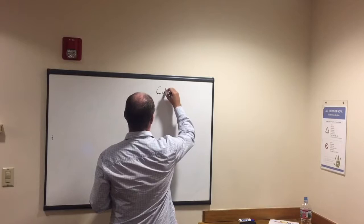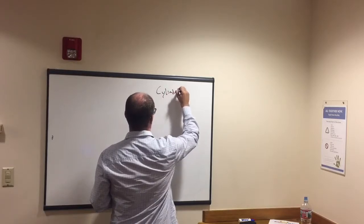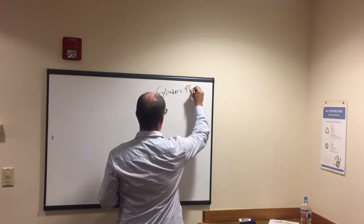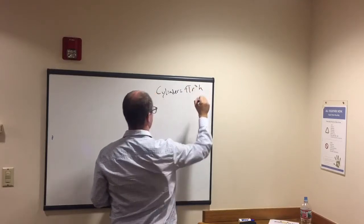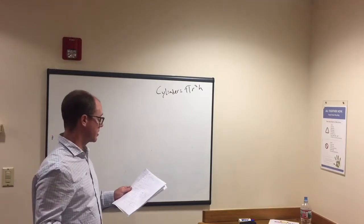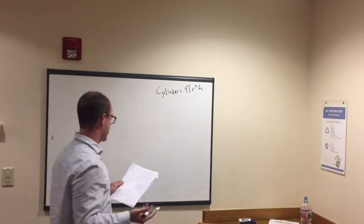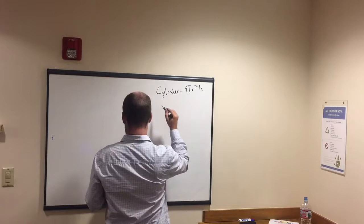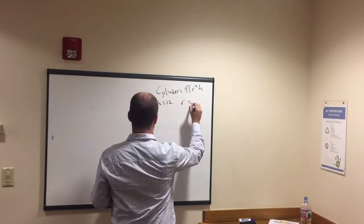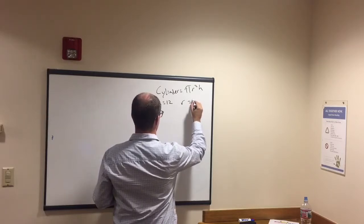Second one, cylinder equals pi r squared h. Okay, so again, it's a formula that you have to know. You're going to see a cylinder question most likely. And they're going to give you the height and the radius. So in this example, we have height equals 12, radius 7.